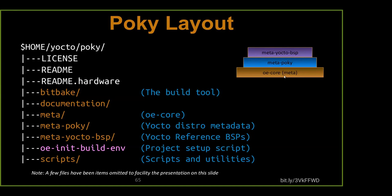One of the strengths the Yocto project has is documentation — almost to the point where some people say there's too much. I don't agree; there's never too much documentation. So then we have our first layer — OECore, the meta layer. The name meta is going to be used for all the layers — meta-something, or just simply meta. OECore is simply called meta; that's both its layer name and its directory name.